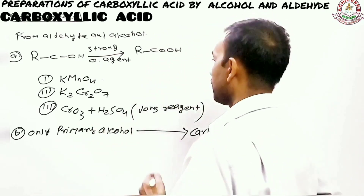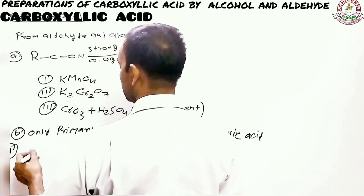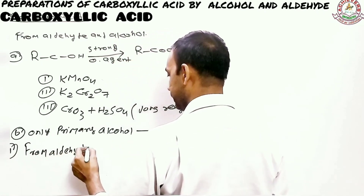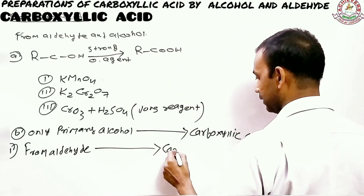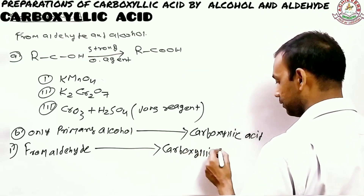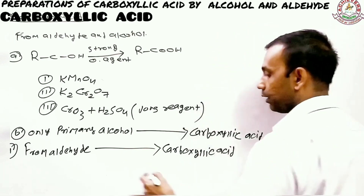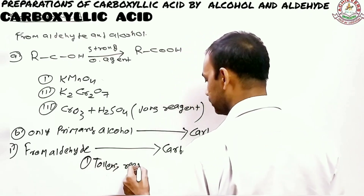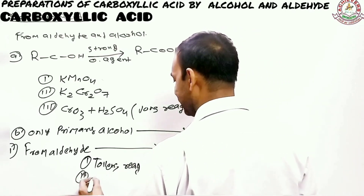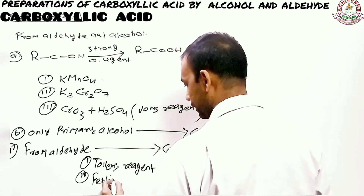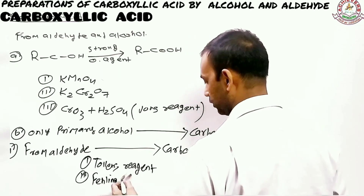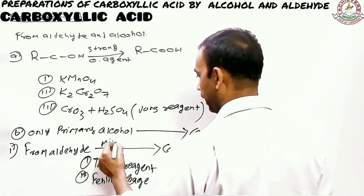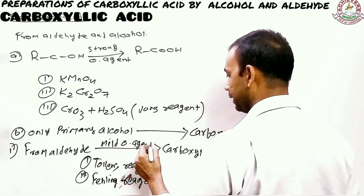Another option we have — the second option — is from aldehyde. Aldehydes can be converted into carboxylic acid. How many options are there? The first option is Tollens reagent, and the second one is Fehling solution, also called Fehling reagent. These are actually two mild oxidizing agents, and they are used to convert aldehyde into carboxylic acid.